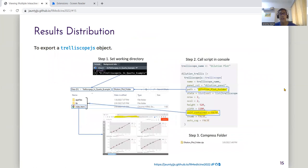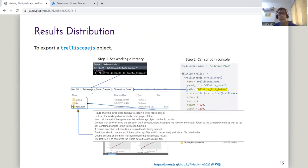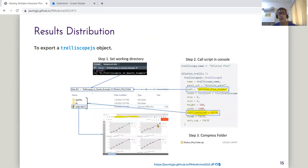Next, we go to results distribution. To explore the Trelliscope.js object, what you need to do is to set your working directory and then call the trelliscope function with the correct parameters in the R console. Ensure that your folder path is correct and that self-contained is set to false to create these objects here. Clicking on the HTML file will give you the Trelliscope plot, and all you have to do is compress them to give you this zip file.